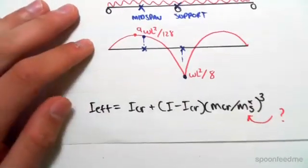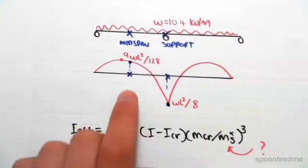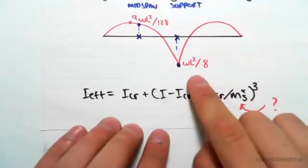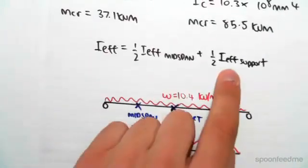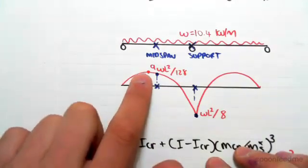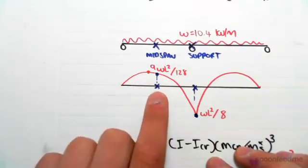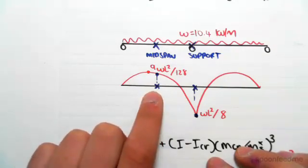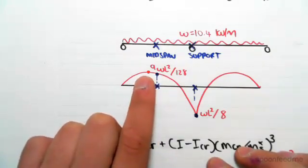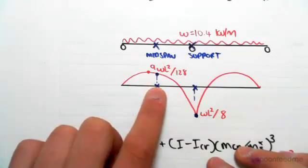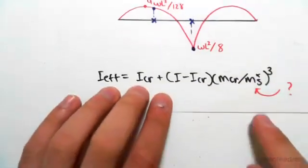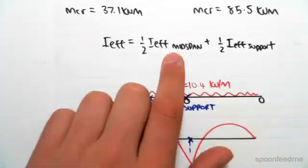Looking at our bending moment diagram, for a continuous beam we've been given two values. At the support, I_effective uses W·L²/8. For mid-span, the maximum sagging moment of 9·W·L²/128 does not actually occur at mid-span — it occurs slightly off mid-span. So we need to make cuts and free body diagrams to work out the moment at mid-span in order to find MS* for the I_effective at mid-span.